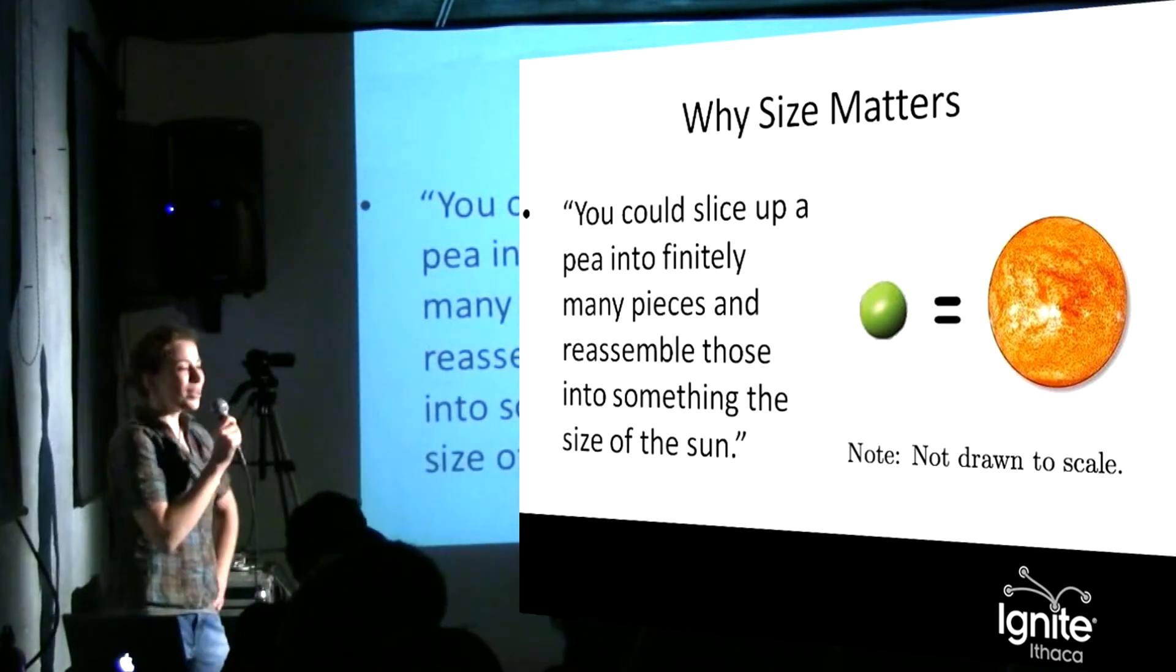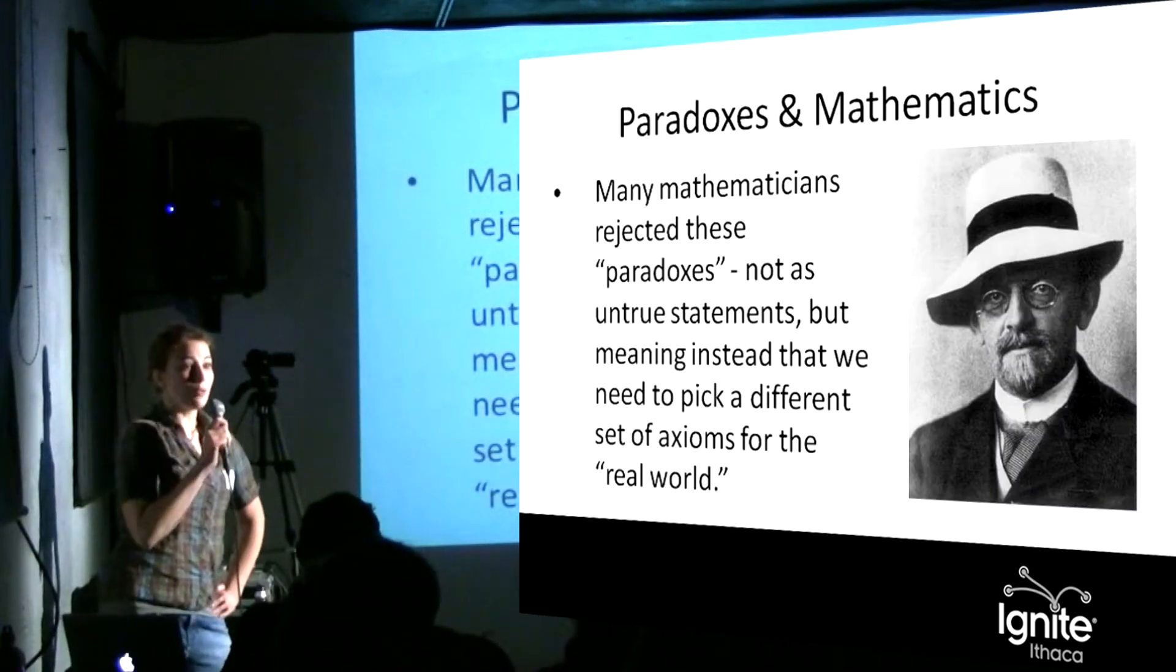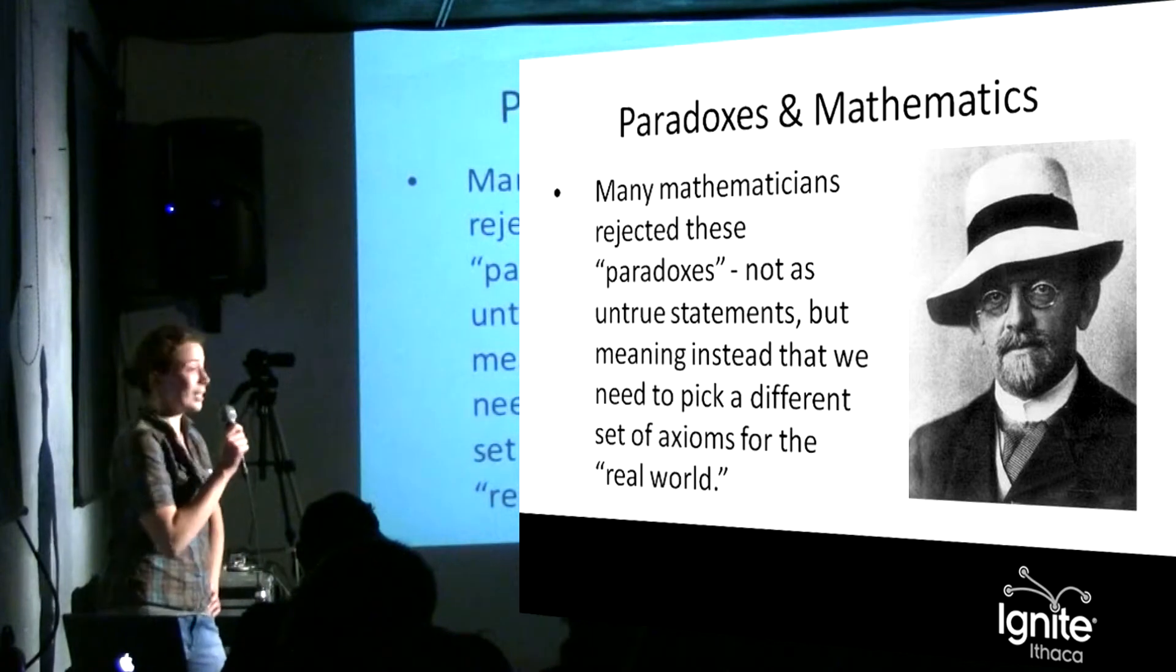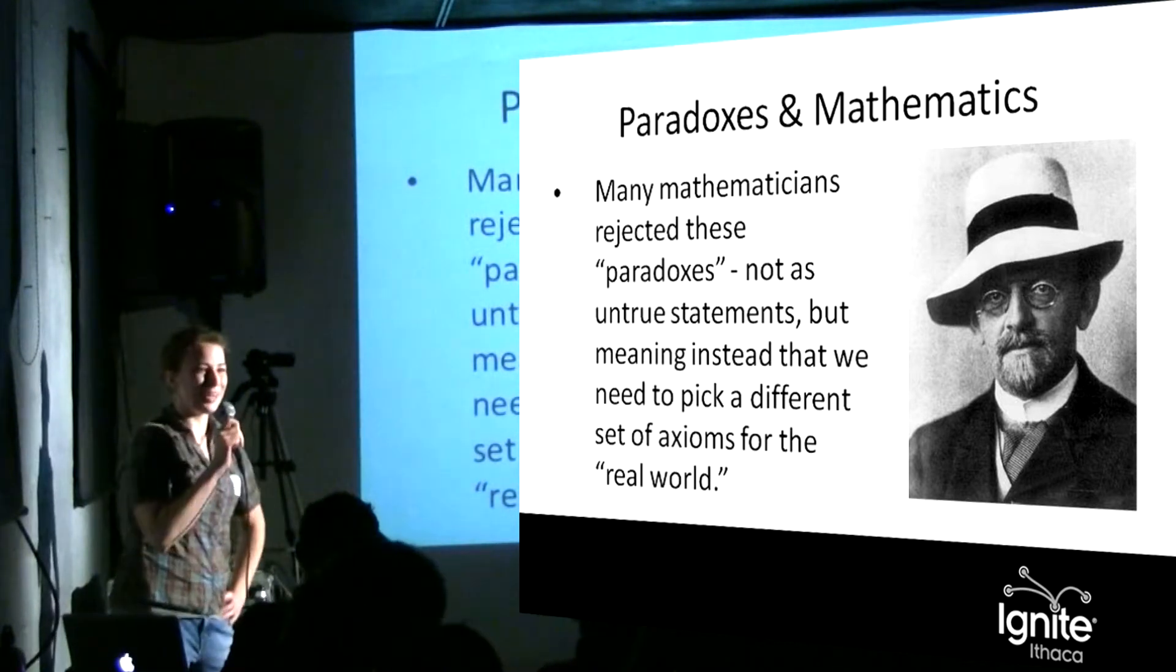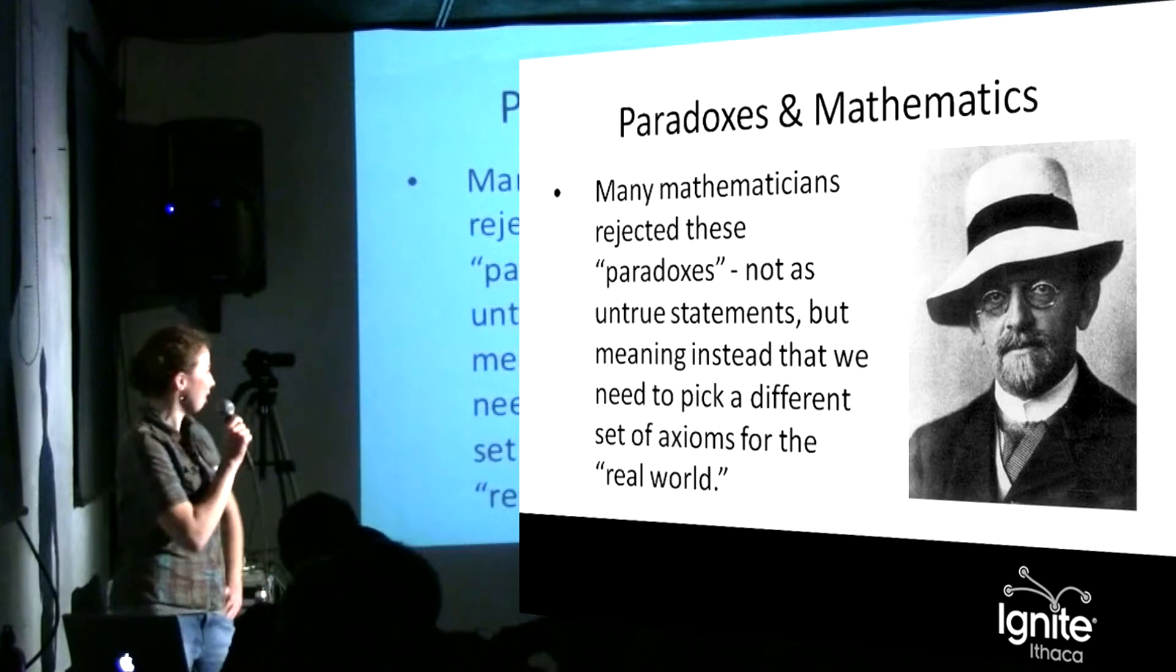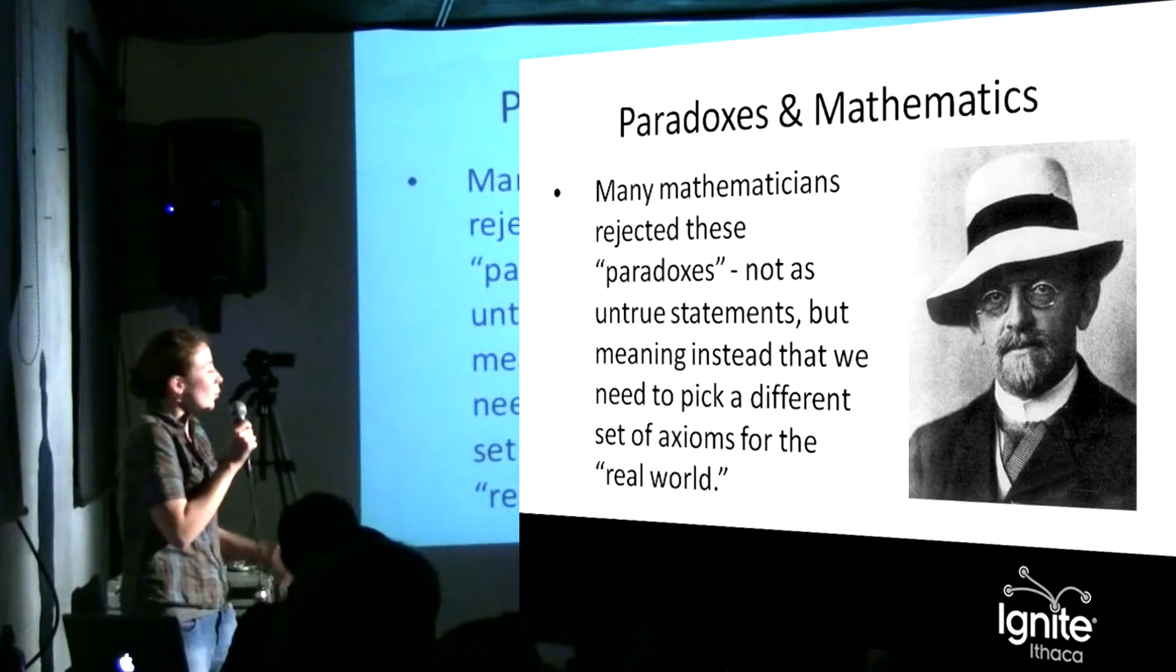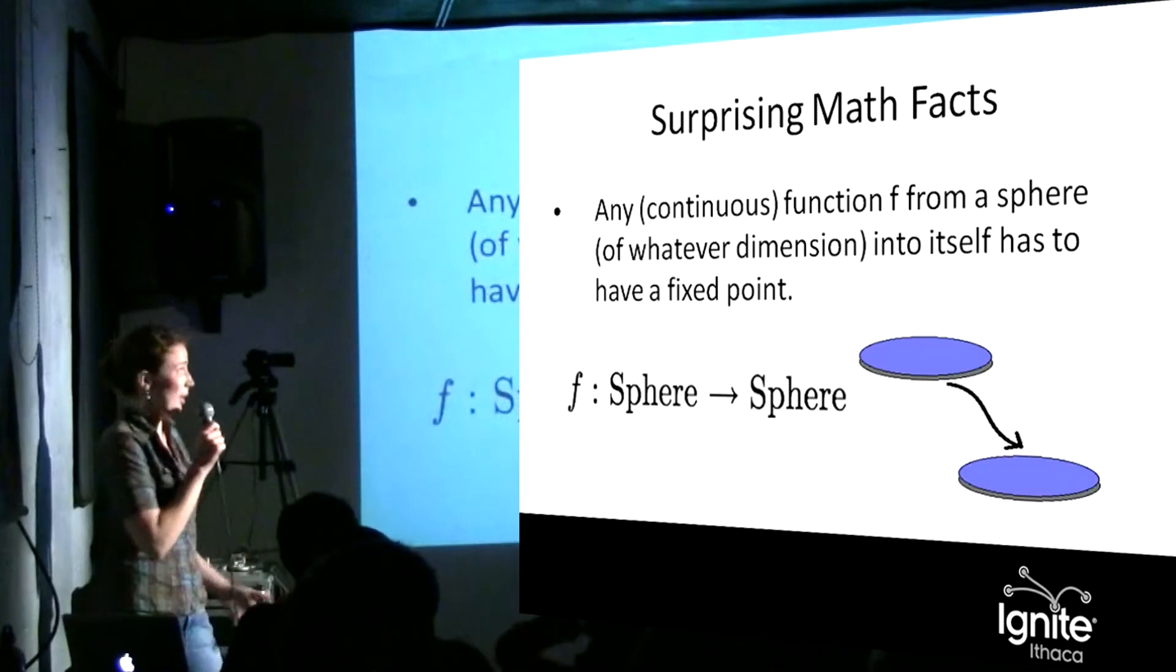This axiom eventually led to a divide in mathematics during the early 20th century. So this is David Hilbert, who essentially set the mathematical agenda for the past hundred years. So it's not saying that this is untrue, but it means that the real world has a different set of rules than mathematicians thought.